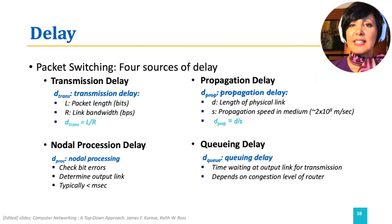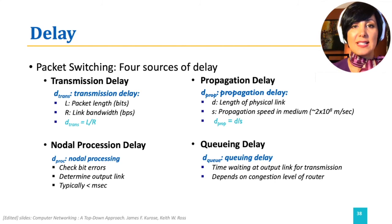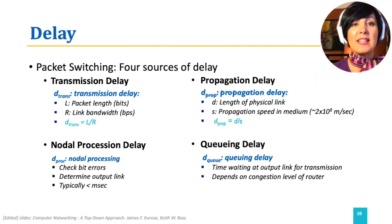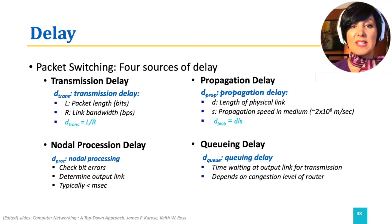Summing up the delay discussion, a packet experiences delay from four different sources: transmission, propagation, nodal processing, and queuing. Among these components, the nodal processing and queuing delays are harder to calculate, as they depend on the details of processing in a node and the number of earlier packets in the queue, respectively, which might be hard to compute for specific cases. The total delay a packet experiences is the sum of these four components.